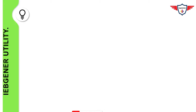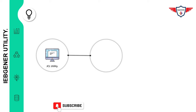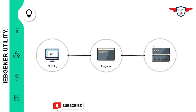Before we start with IBGener utility, let's understand what is a JCL utility, or what do you understand by the term utility. In layman terms, mainframe utility programs, or just utilities, are programs that can be used for common data processing functions like copying or printing a dataset. These utilities are supplied with IBM ZOS and are widely used in batch jobs.